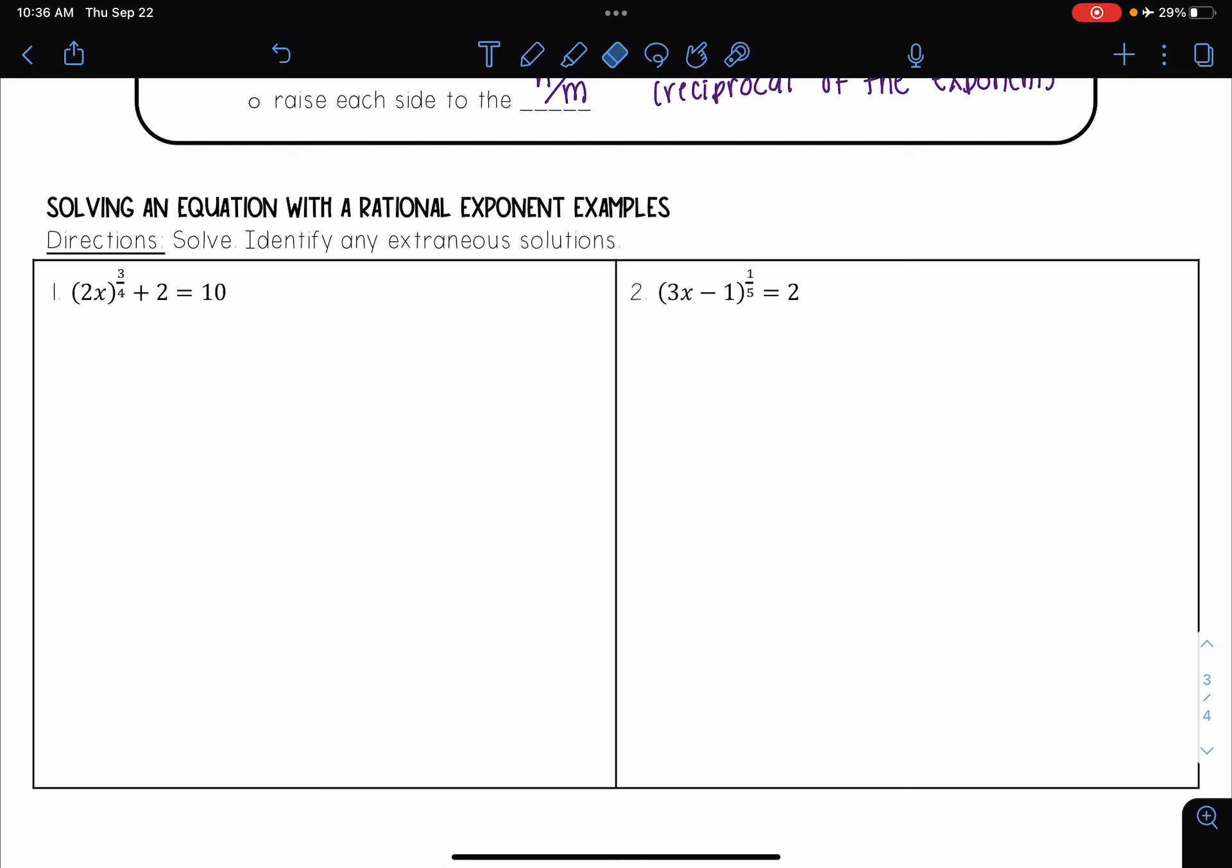So I need to move that plus 2 first. So I'm going to subtract 2 from both sides. And I have 2x raised to the 3 fourths power is equal to 8.